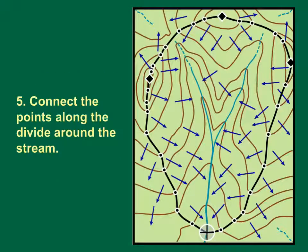The fifth step in the watershed delineation process is to connect the points. In some areas, this can be difficult. In saddles, the dividing line between contours can be ambiguous.